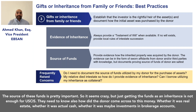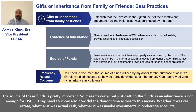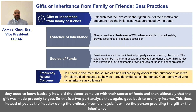The source of these funds is pretty important. Just receiving funds as an inheritance is not enough for USCIS — they also need to know how the donor came across this money, whether it was real estate, actual cash, or investments in brokerage accounts. They need to know basically how the donor came up with their source of funds.